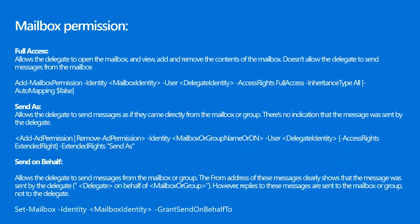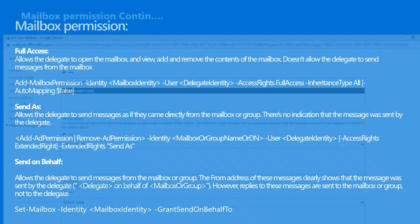Send on Behalf allows the delegate to send messages from the mailbox or group, but the From address clearly shows the message was sent by the delegate on behalf of the mailbox or group. Replies to these messages are sent to the mailbox or group, not to the delegate. The PowerShell command to assign Send on Behalf permission is Set-Mailbox with the mailbox identity and the -GrantSendOnBehalfTo switch.